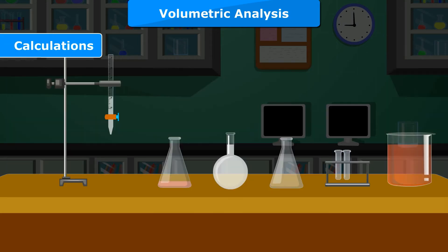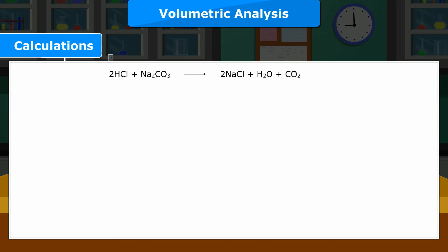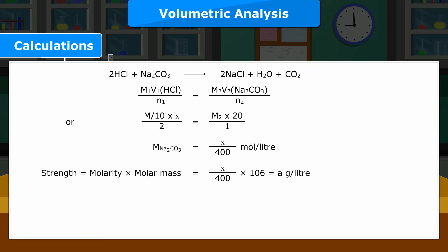Calculations: 2 HCL plus Na2CO3 gives 2 NaCl plus H2O plus CO2. M1V1(HCL) upon N1 is equal to M2V2(Na2CO3) upon N2. Or M by 10 into X upon 2 is equal to M2 into 20 upon 1. M(Na2CO3) is equal to X upon 400 mole per litre.